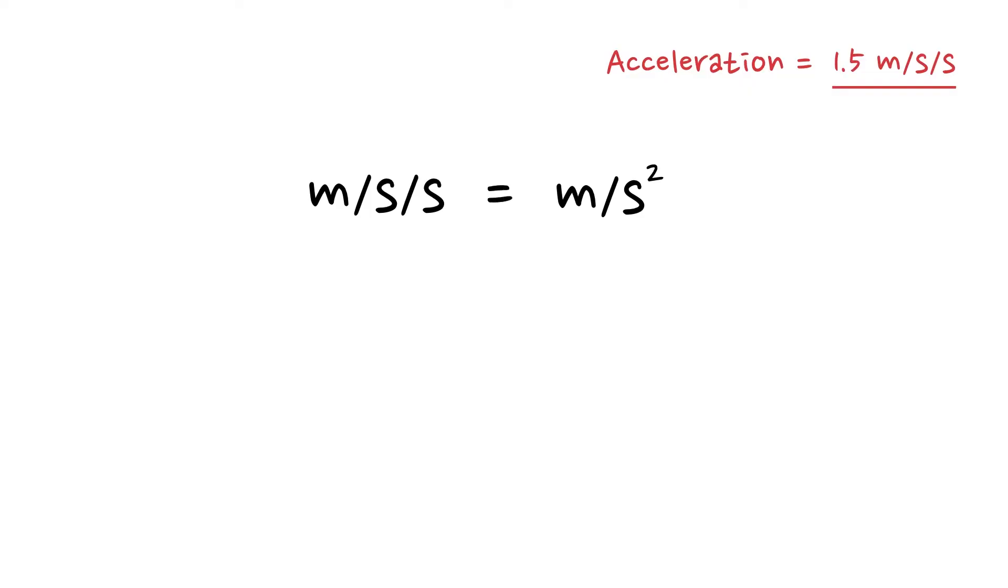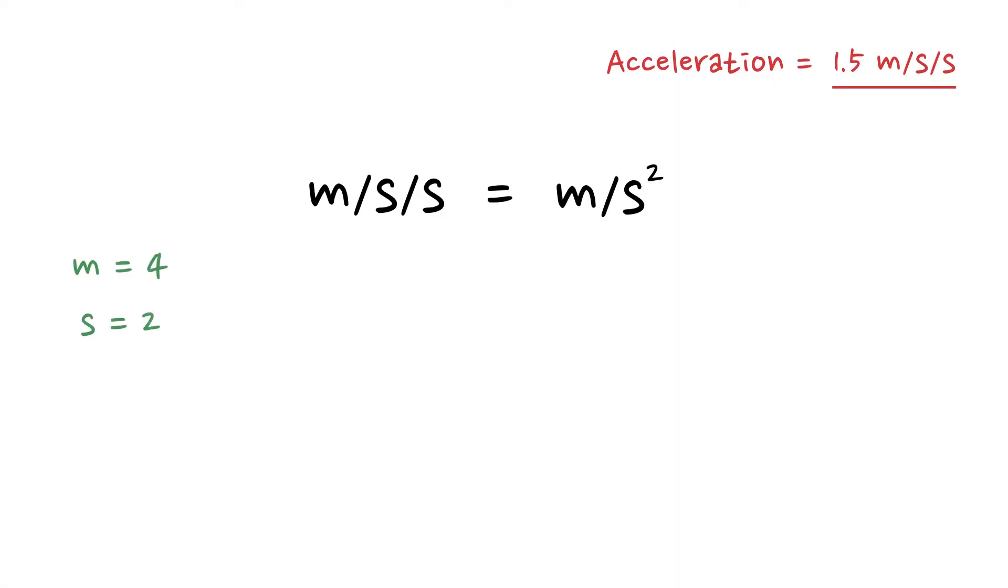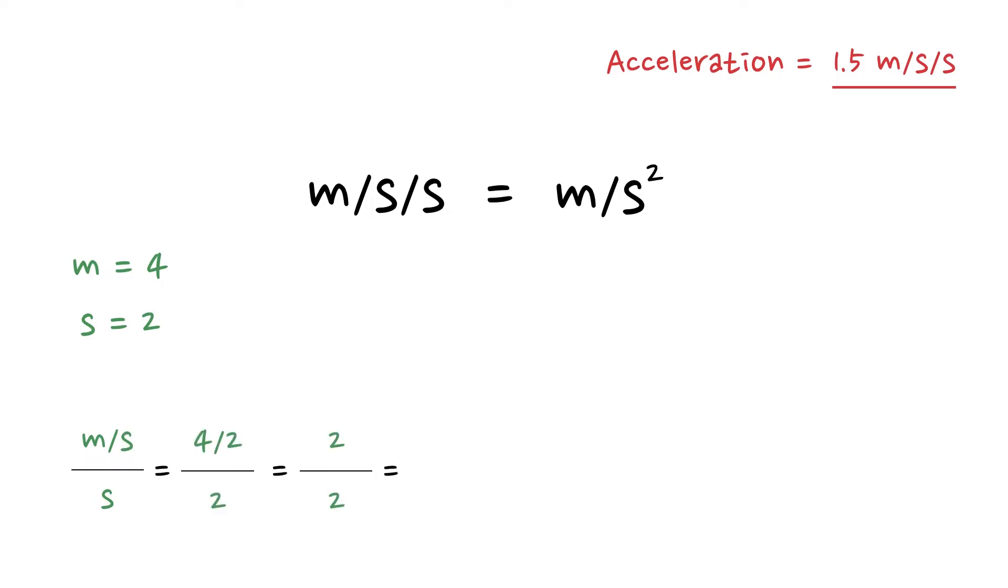Now the reason we do that is it's a little bit nicer to work with, but it's actually exactly the same thing. If we substitute some numbers into those units, we can actually prove that they are the same thing. Let's imagine that we substitute M with the number 4 and S with the number 2. So we would do meters per second divided by seconds would become 4 divided by 2 divided by 2, which would give us 2 divided by 2, which equals 1.